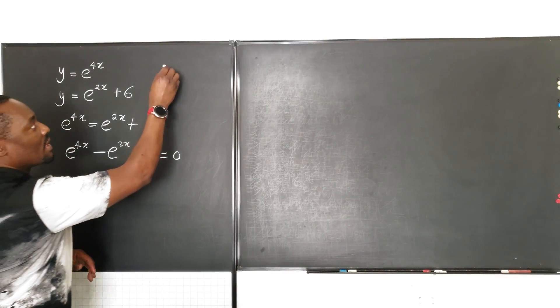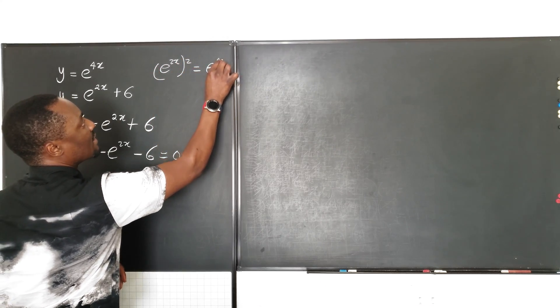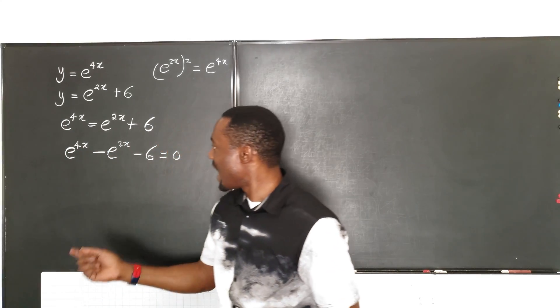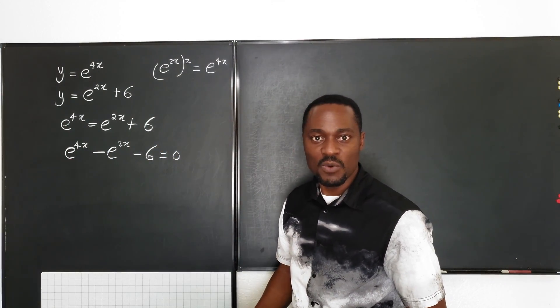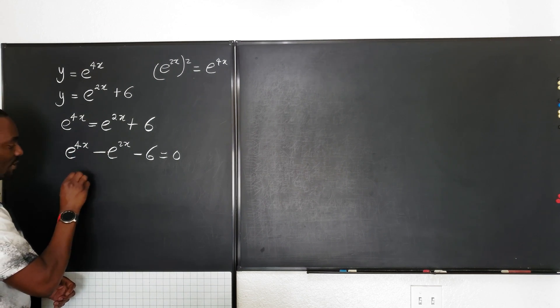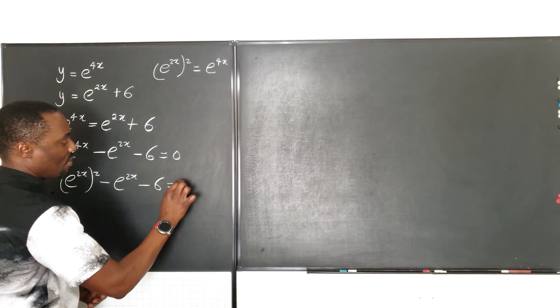So now if you remember, e to the 2x squared must be e to the 4x. Just multiply this by this, that law of exponents. So that's what we're going to be applying. And then we can see this looks like a quadratic equation in which we can rewrite this as e to the 2x squared minus e to the 2x minus 6 equals zero.